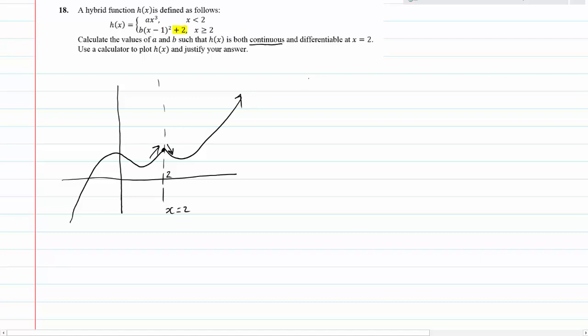First of all, we have h of x at x equals 2 for the continuity is going to give us these two functions. We have h of 2 is equal to a times 2 cubed which is equal to 8a and h of 2 has to also be equal to b times 2 minus 1 squared plus 2 which is equal to b plus 2. And so therefore we have 8a has to be equal to b plus 2 for that continuity to hold.